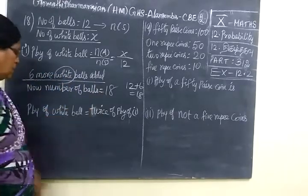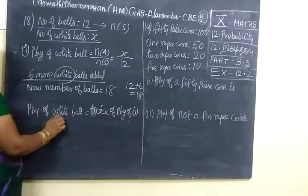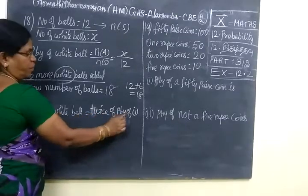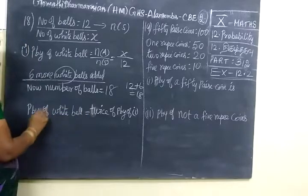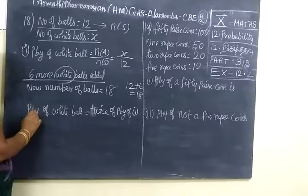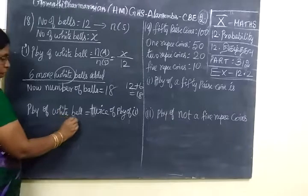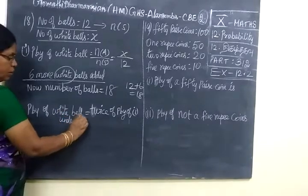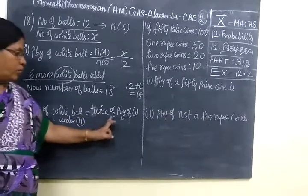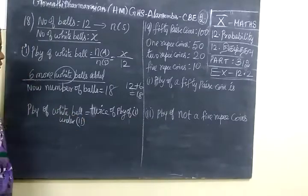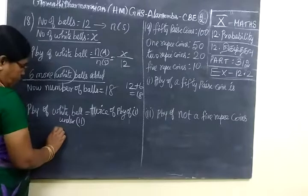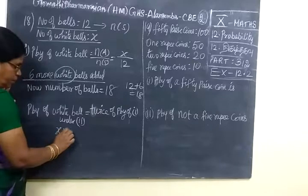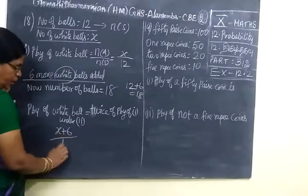So total is 18. So probability of white balls equal to twice of probability of case 1. Here selection of, that means probability of white balls under case 2, under case 2 equal to twice of probability of case 1. So here probability is...